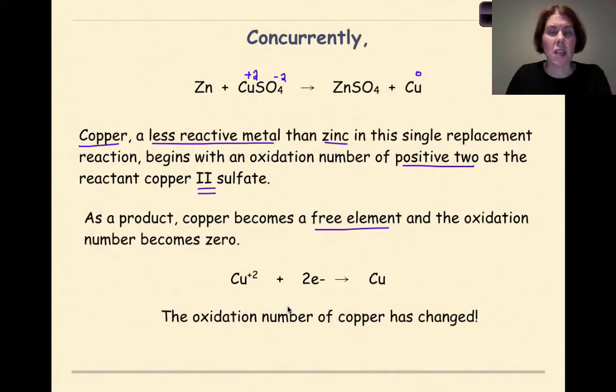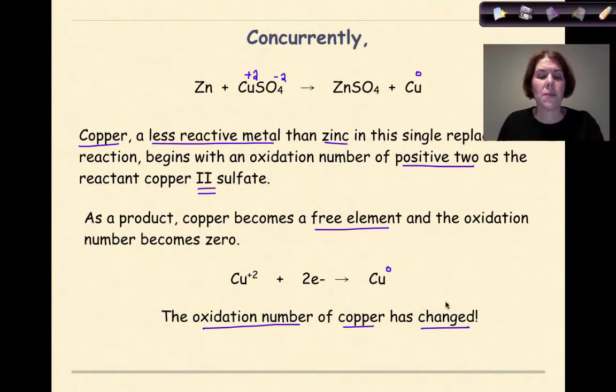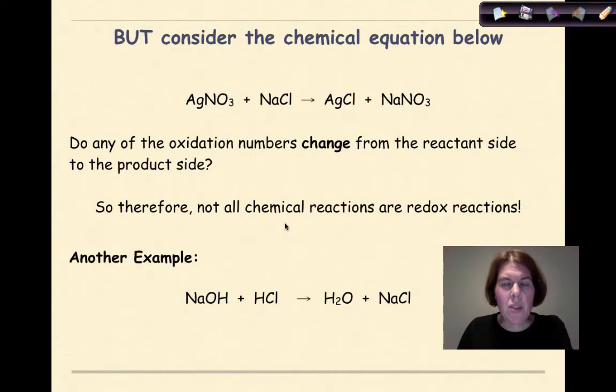Therefore, we can write the reduction half reaction of Cu plus two plus two electrons yields Cu zero. Again, we notice that as we go from reactants to products, the oxidation number of the copper has changed. When we see a change in oxidation numbers as we go from reactants to products, that tells us that we're dealing with a redox reaction.